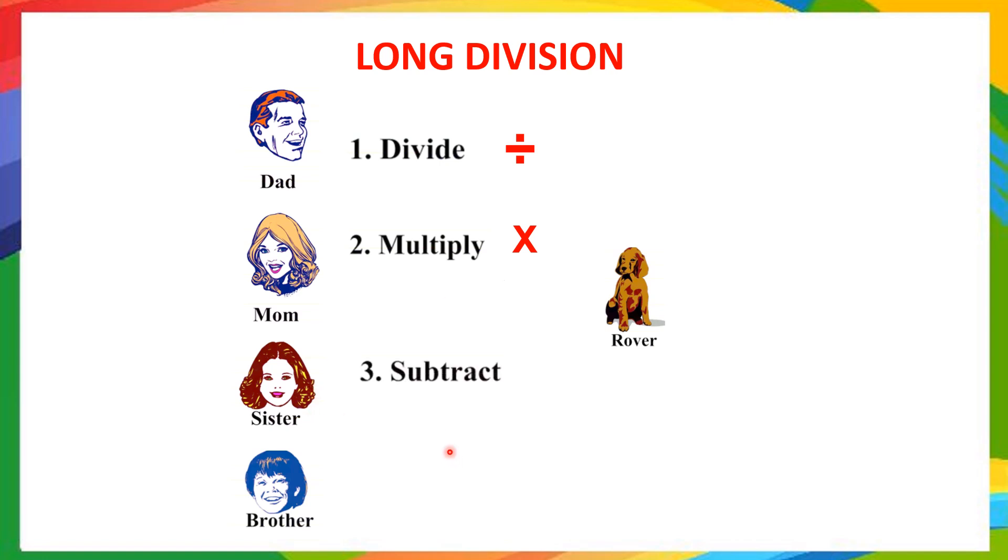Third one, sister, S. Means third step is subtract. Minus. B, brother. Means you have to bring it down. B for bring it down. And R, rover. Rover means it is repeat or it is a remainder. You have to repeat the division process or the division process is not going on. You can stop it over there.